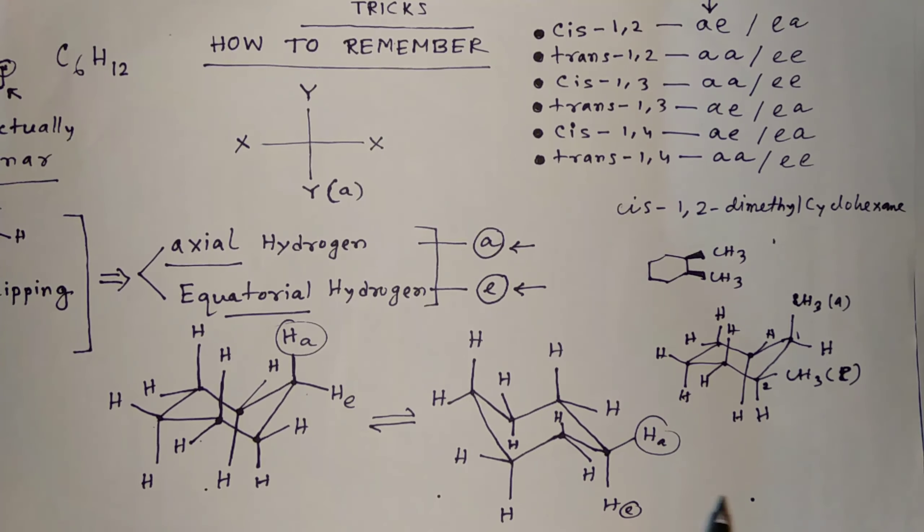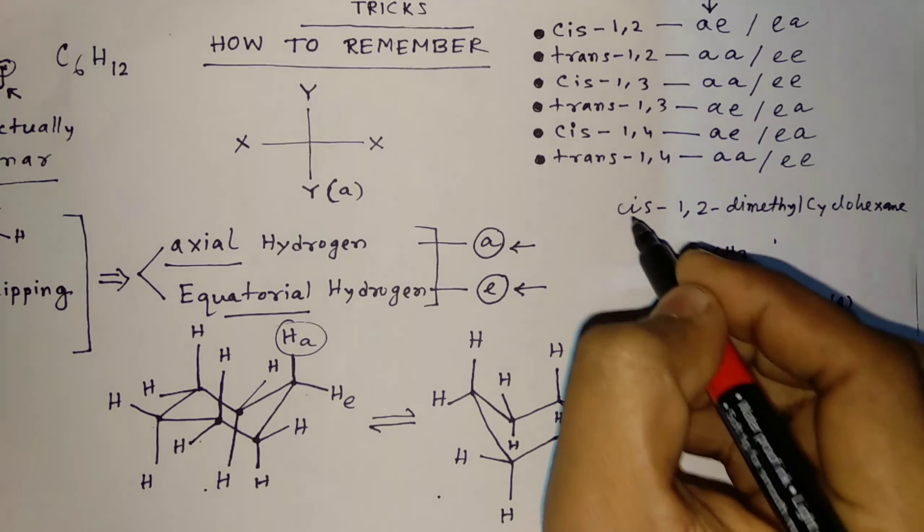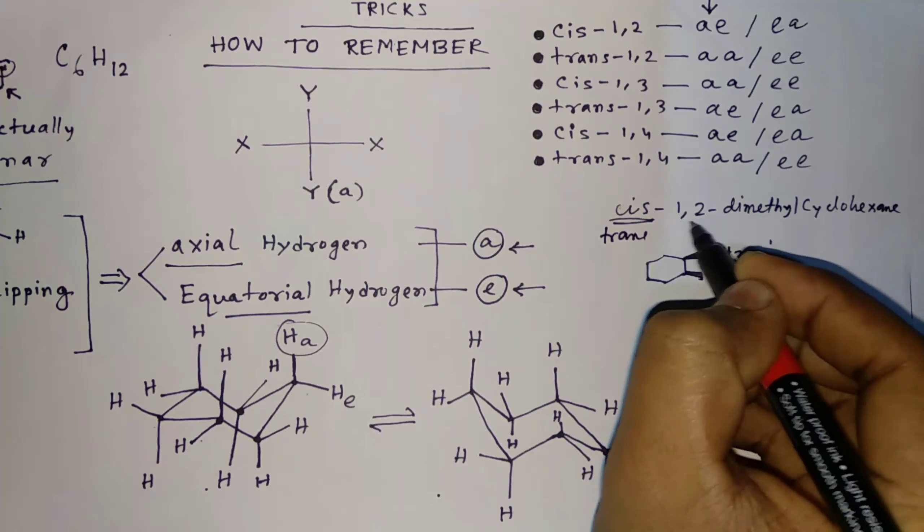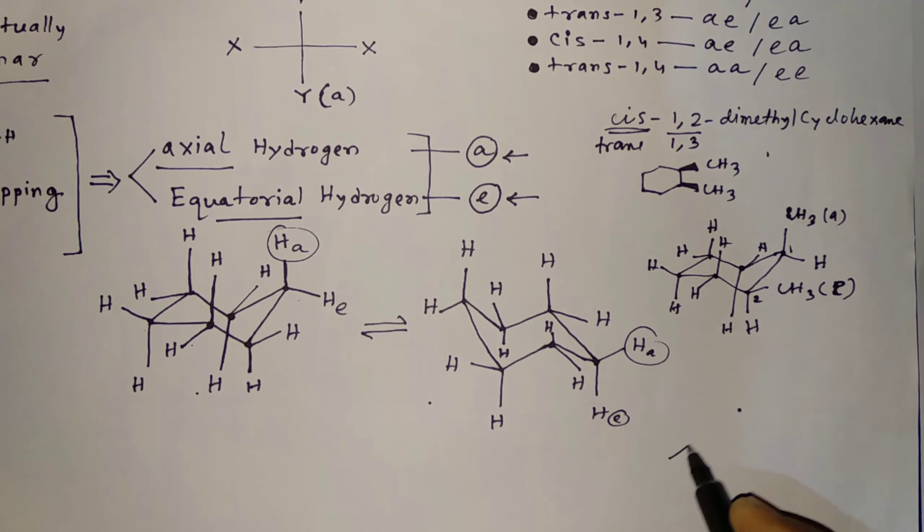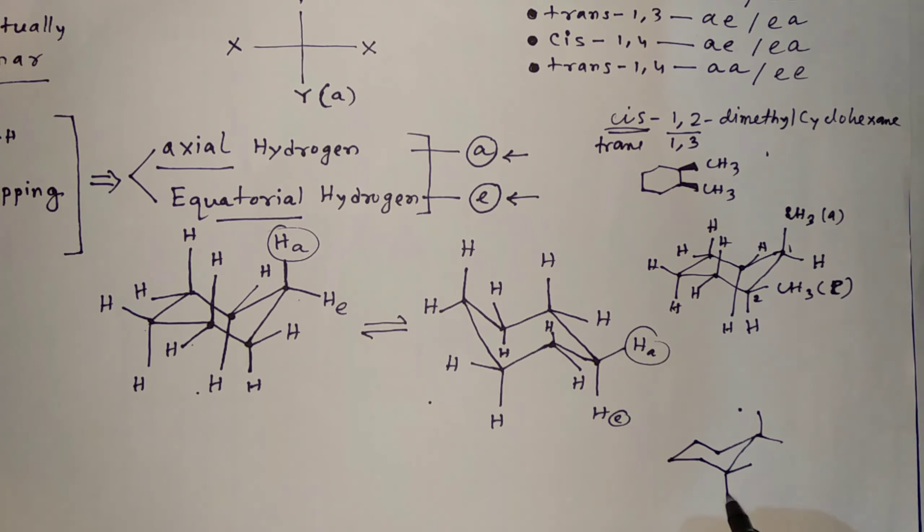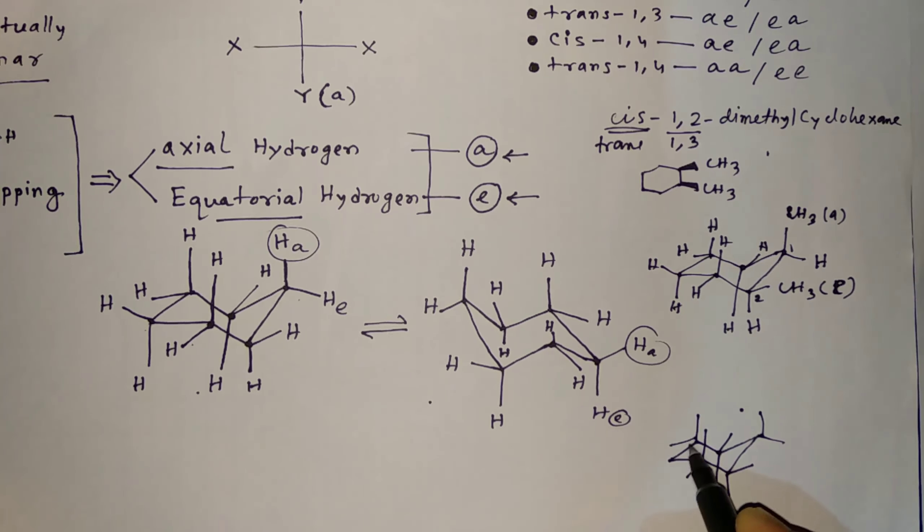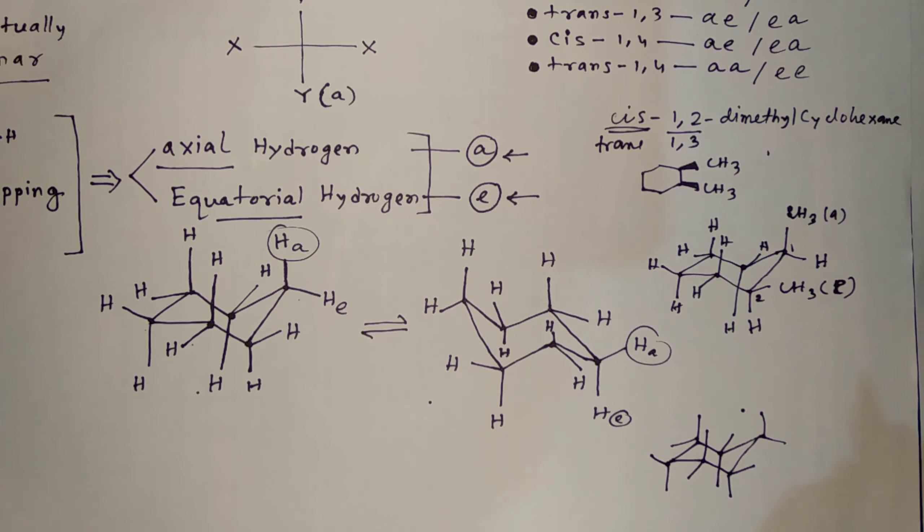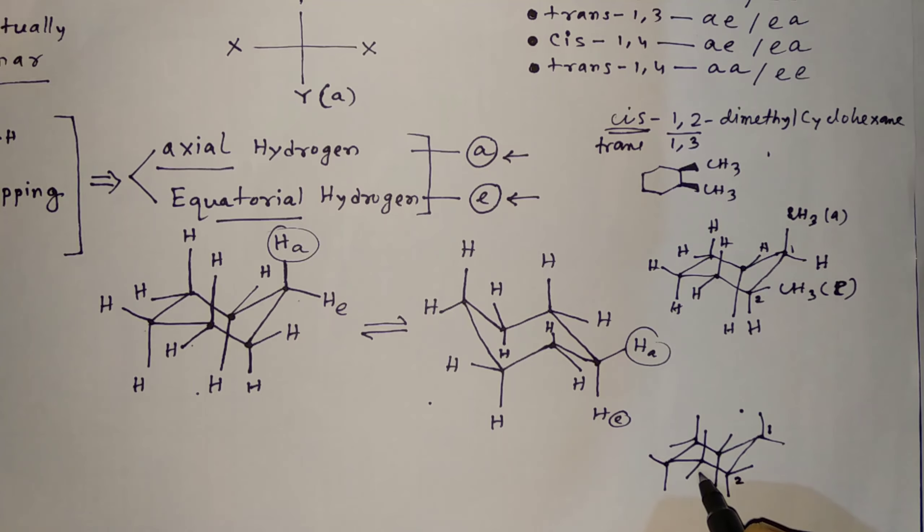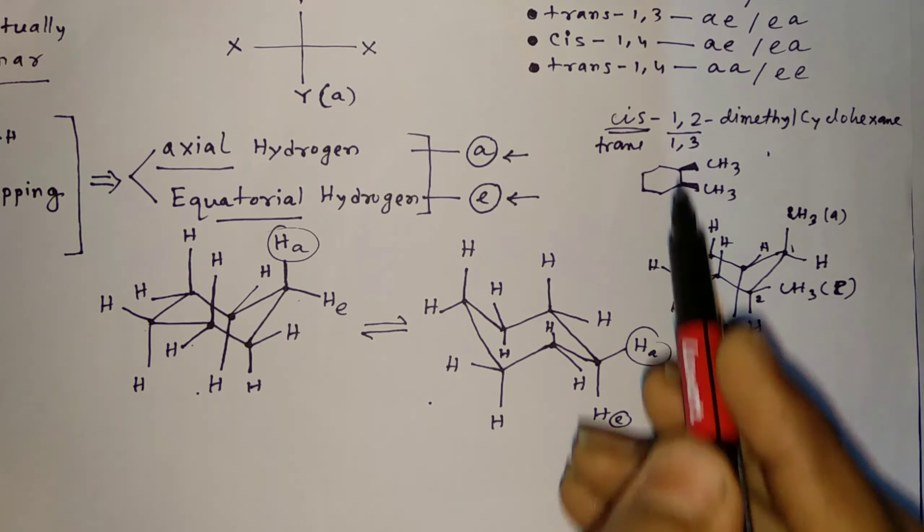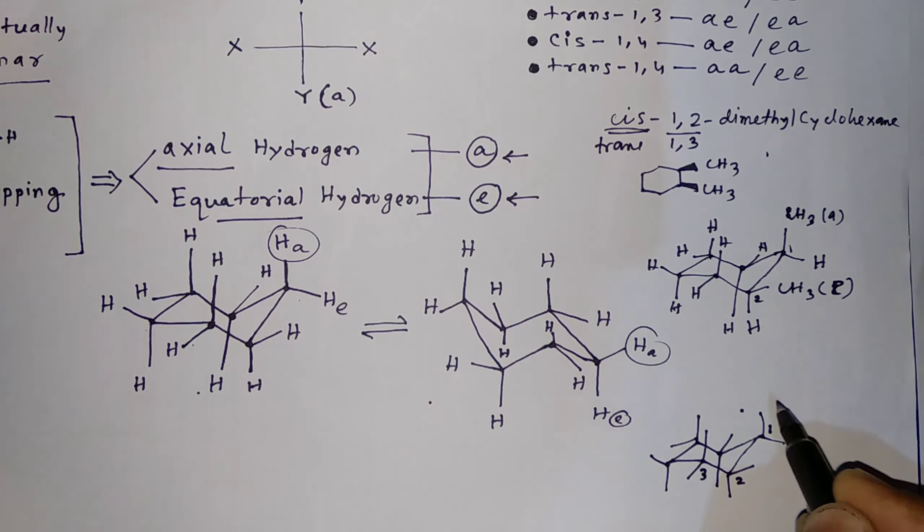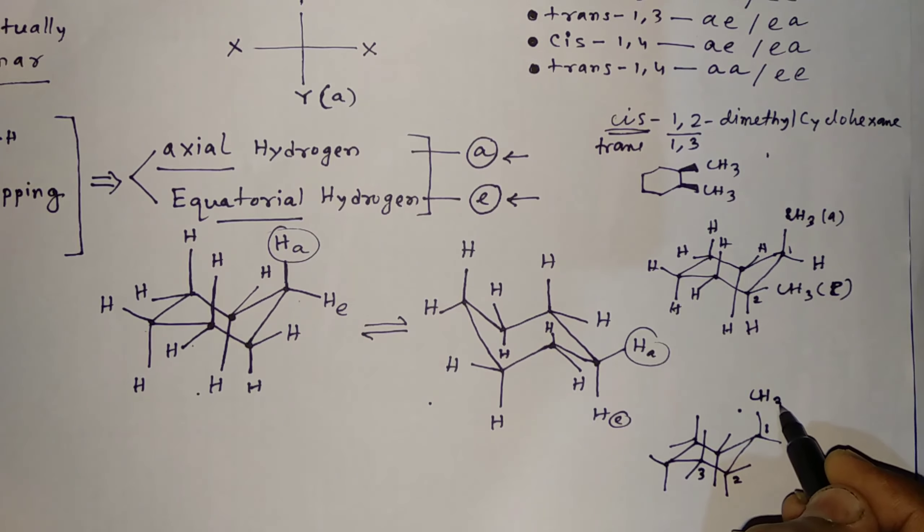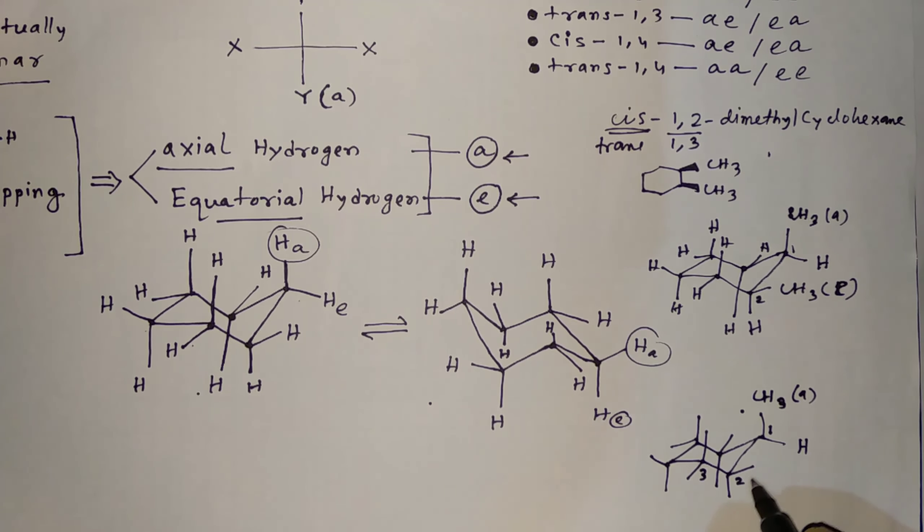And if it says CIS or TRANS-1,3 system, so if this is TRANS-1,3 dimethylcyclohexane, what will be the right structure? Here, first, let's draw the system. Now, let's number this 1, 2 and this is 3. So 1,3, that means TRANS-1,3 is AA or EE.